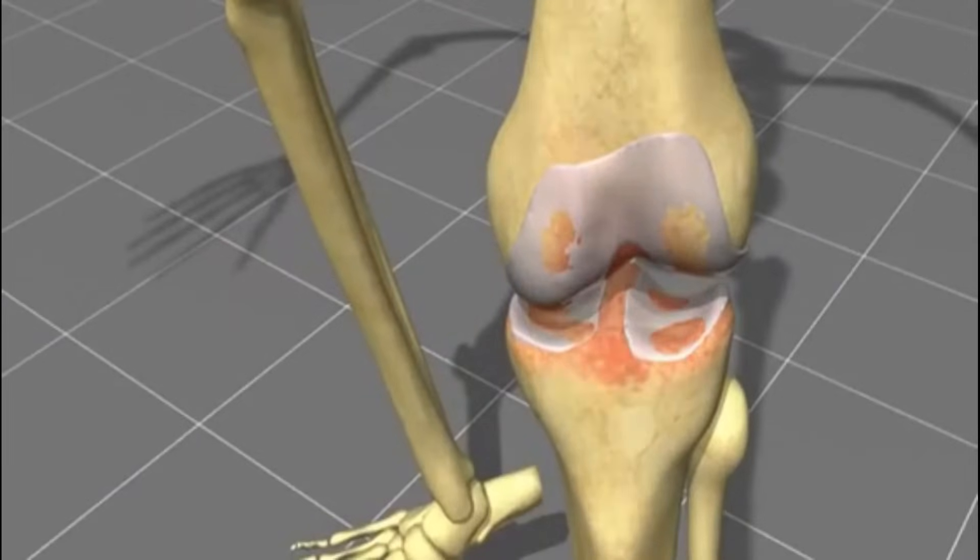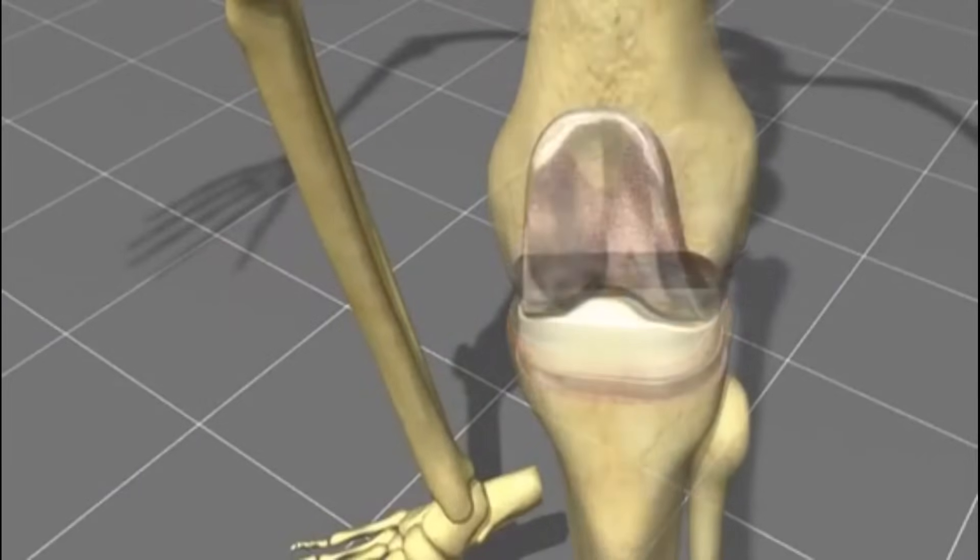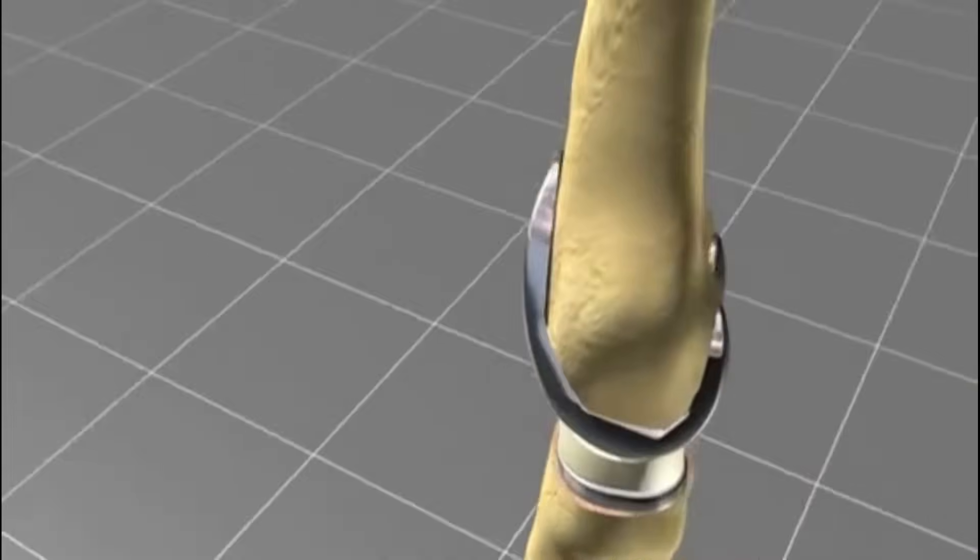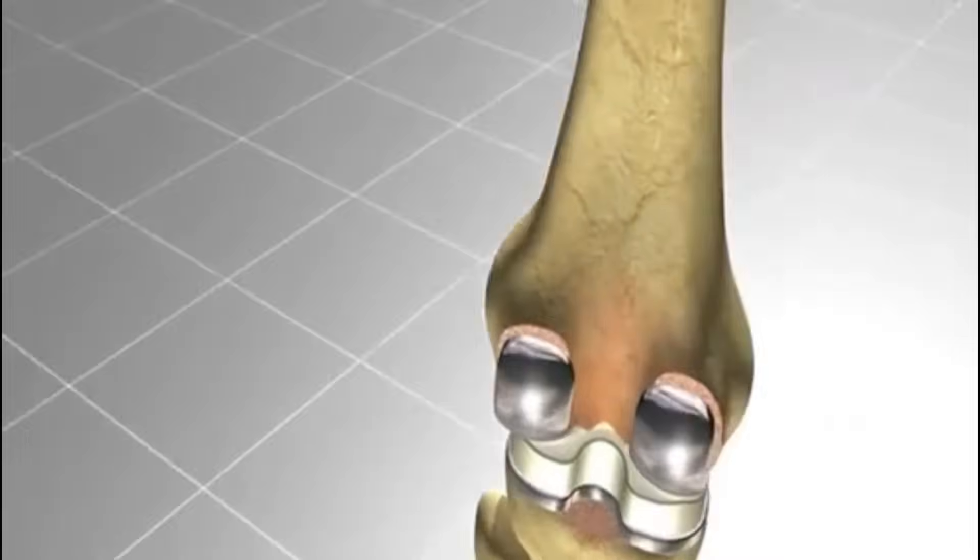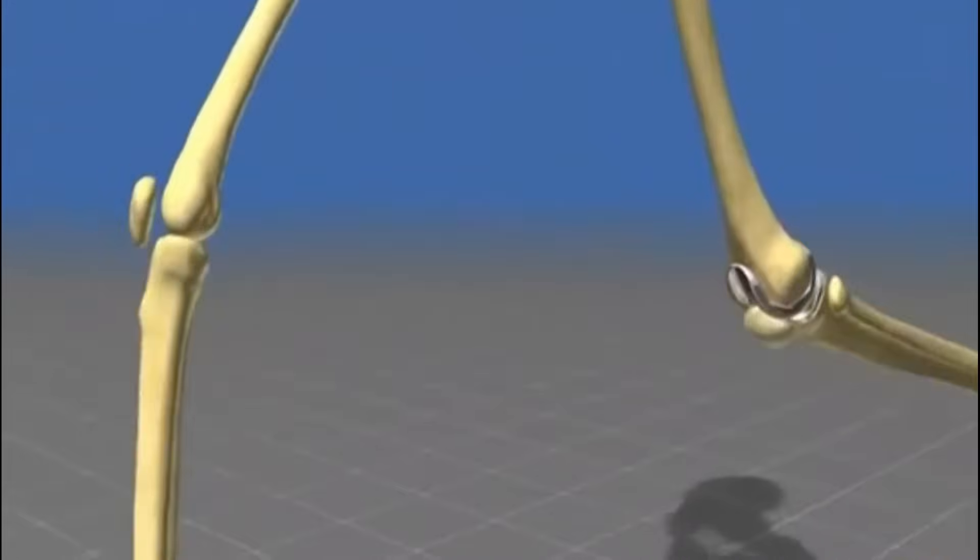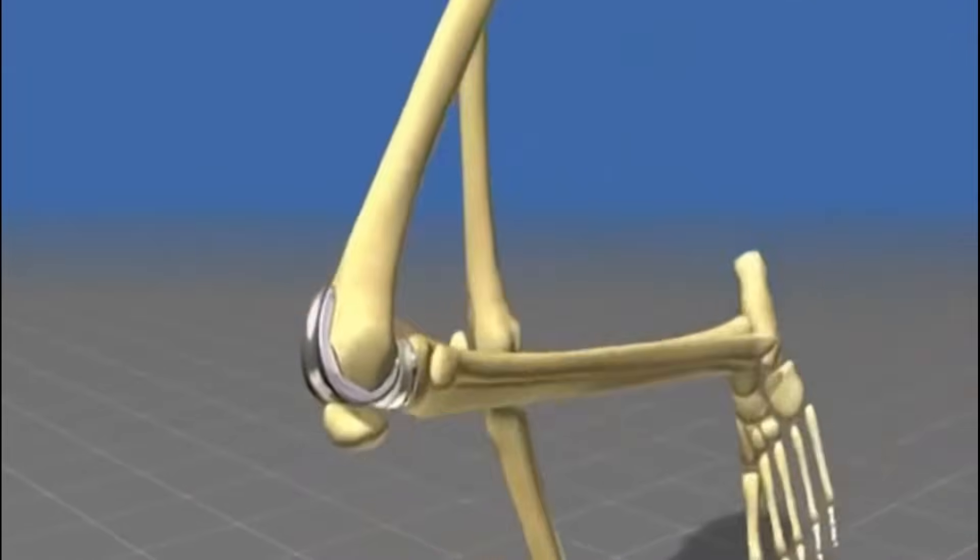In this situation, the only solution for the patient is a so-called total joint replacement. Modern total joint replacement does not mean that a total joint is replaced. Only the damaged cartilage surfaces are replaced by an implant.